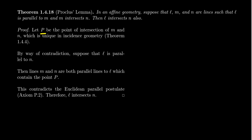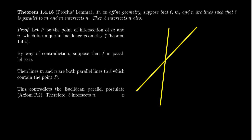Let P be the point of intersection between M and N — we know by assumption that M and N intersect each other. Let's draw a sketch: we have our two lines M and N. By assumption they intersect each other, so let's call that point P.